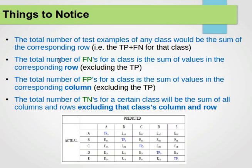One thing to mention is that if we want to find the number of test examples for any class, we can just sum the row corresponding to that class. So if we want the number of test examples belonging to class C, we sum the row corresponding to class C. That row contains the true positive of class C and its false negatives. The total number of false negatives for a class is the sum of values in the corresponding row excluding the true positive of that class.